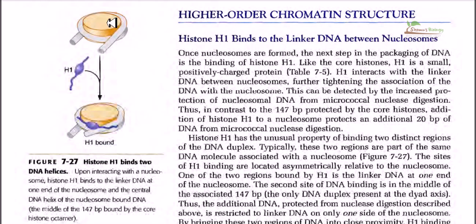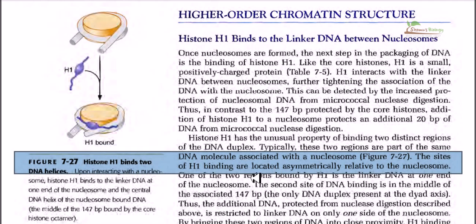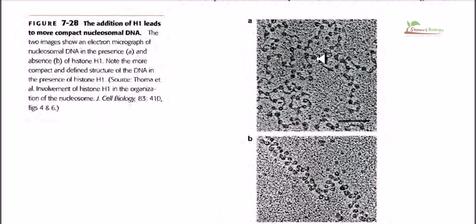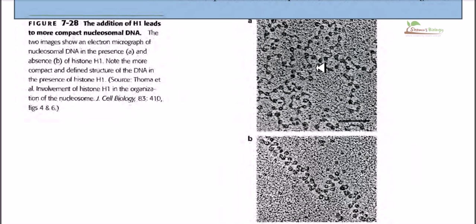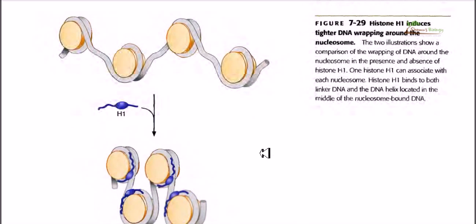If we just wrap the DNA sequence around the histone protein, it is not strong or compact enough. We need to add another protein, which is H1. Normally in the nucleosome model, the DNA sequence is almost 145 to 150 nucleotides long, and H1 protein helps make this much more condensed. If we look at the structure without H1 protein versus with H1, the same amount of DNA is present in both cases, but the attachment of H1 makes the structure much more condensed and compact.